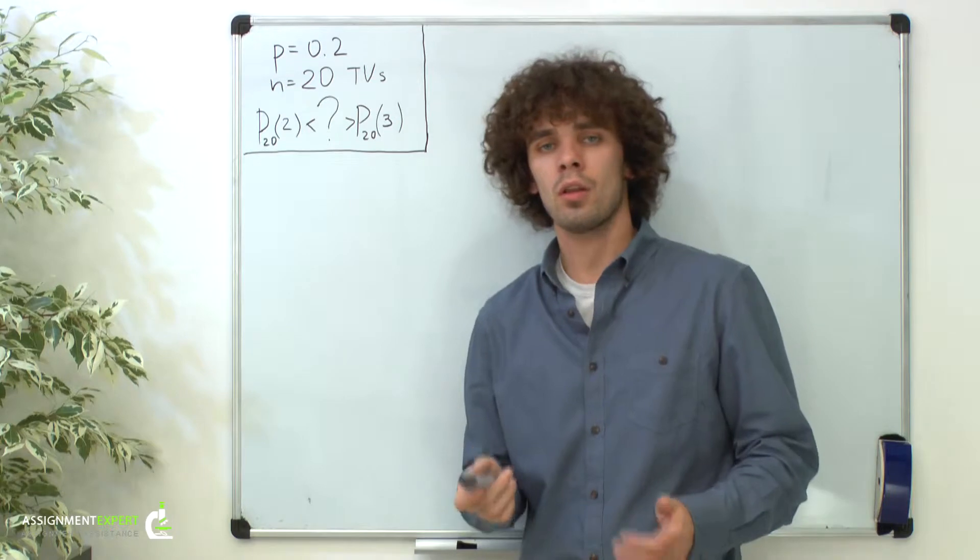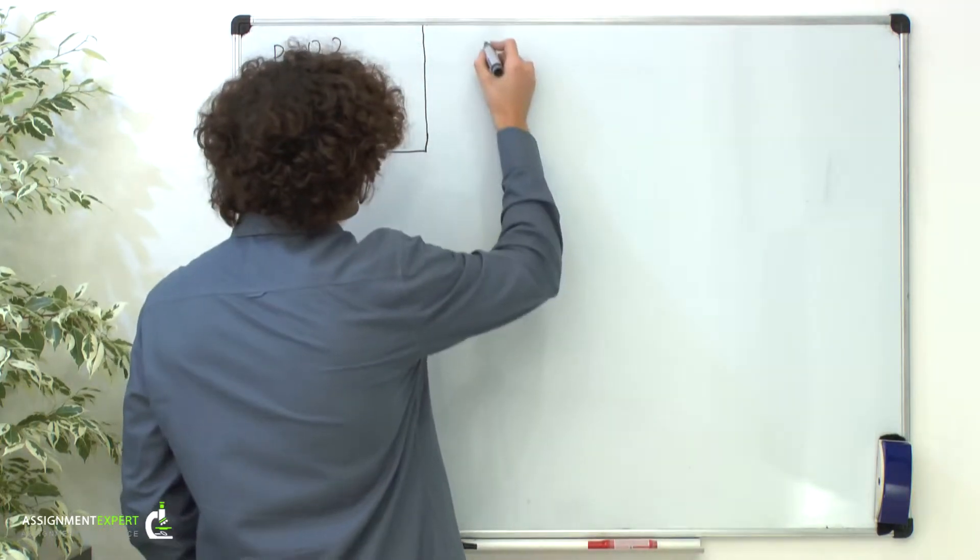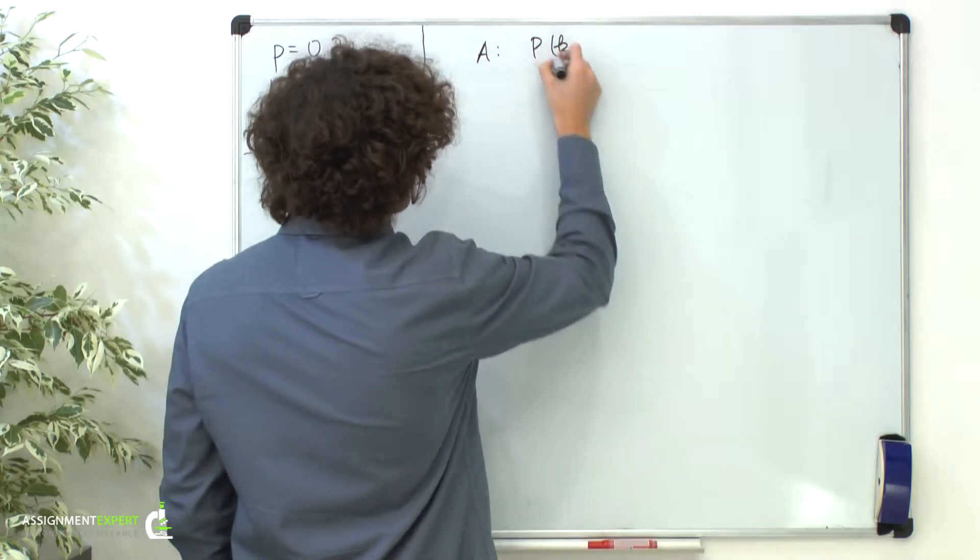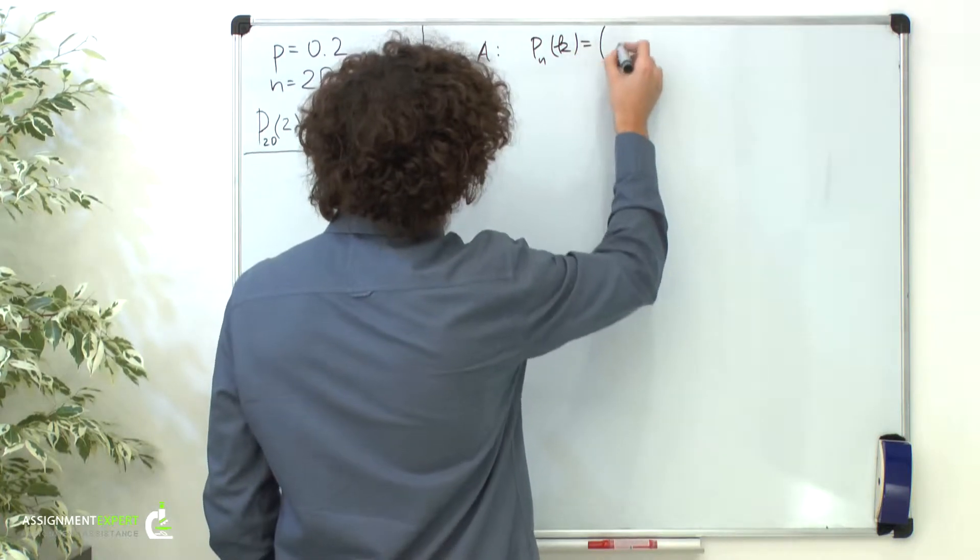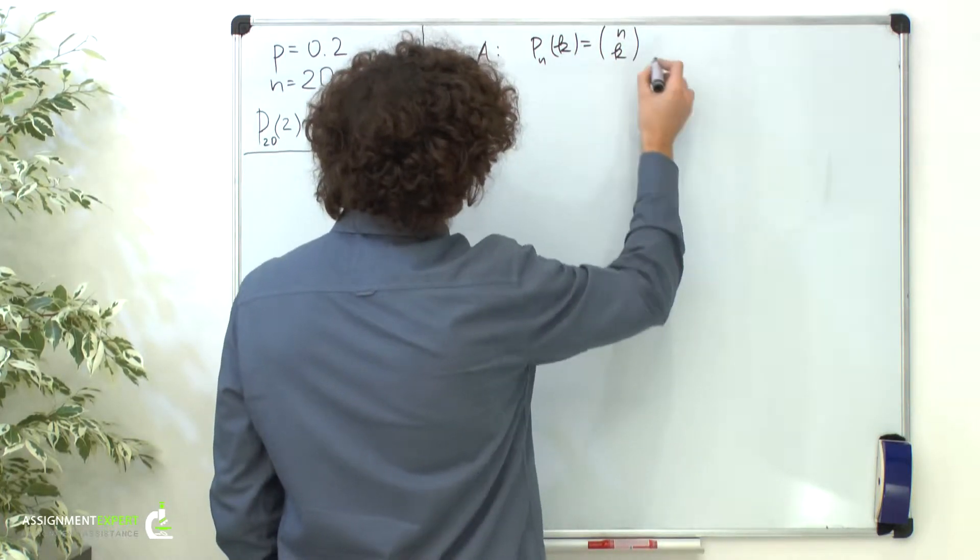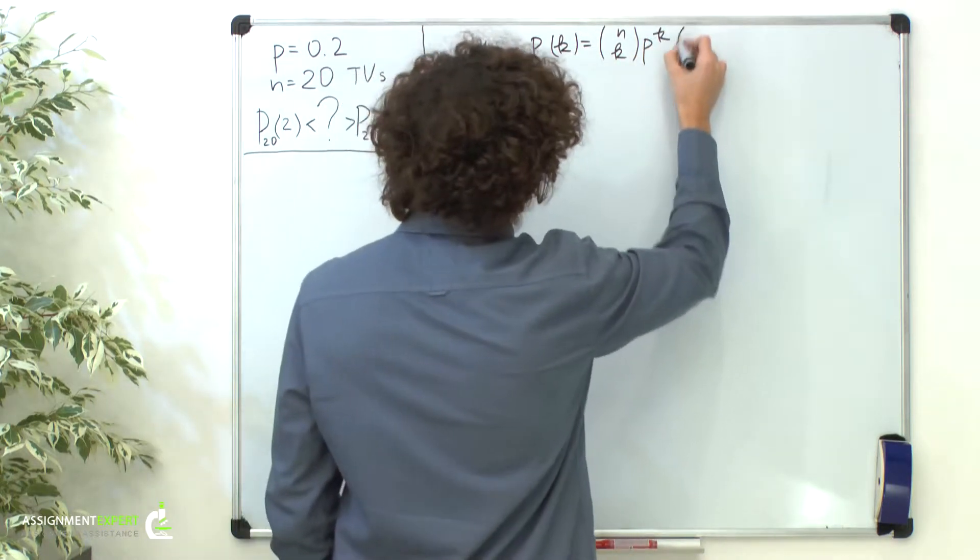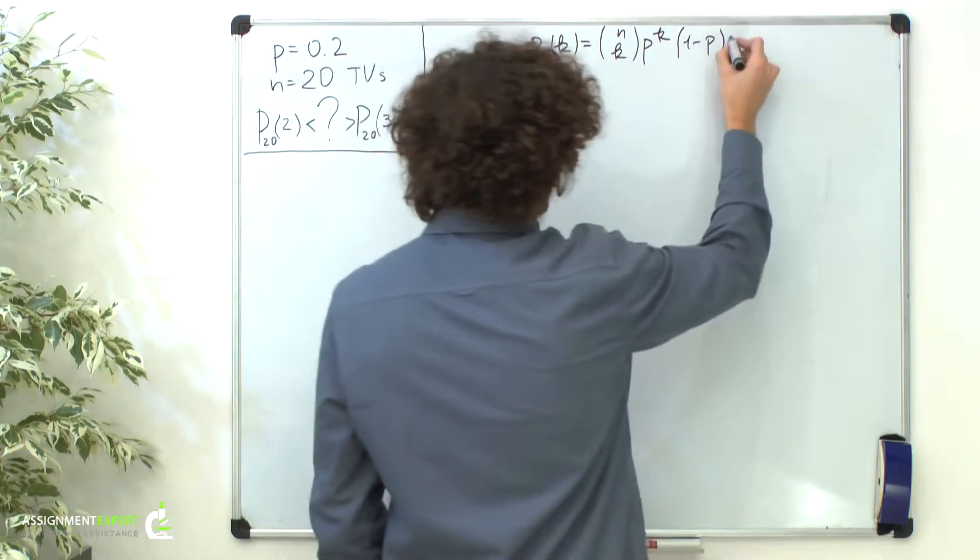Well, first of all, let's recall the Bernoulli formula. The probability that some event A will occur k times in a total of n independent trials equals n choose k times p raised to the power of k times (1 minus p) raised to the power of (n minus k).